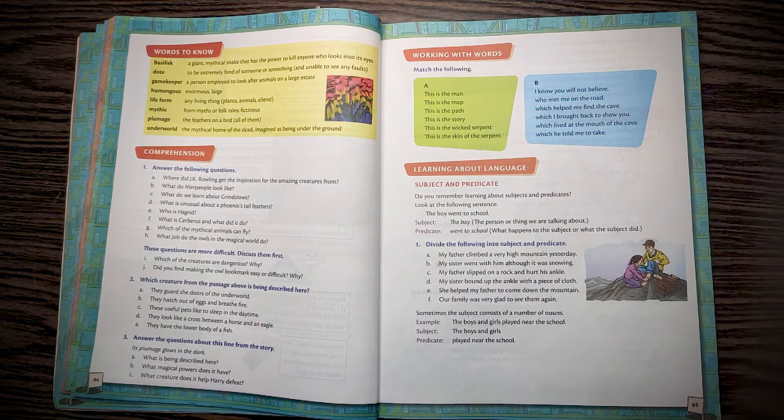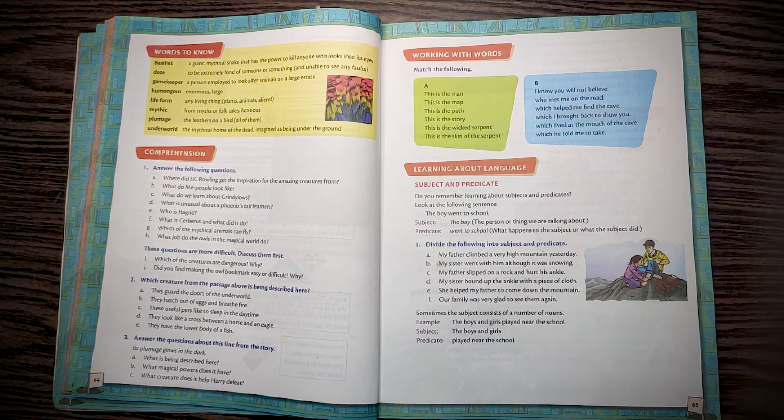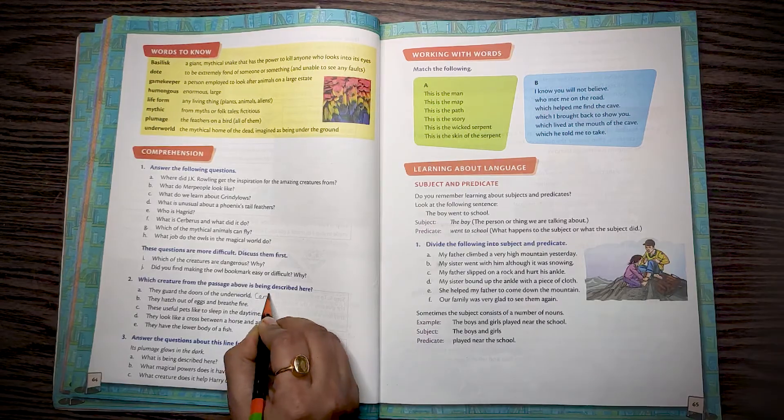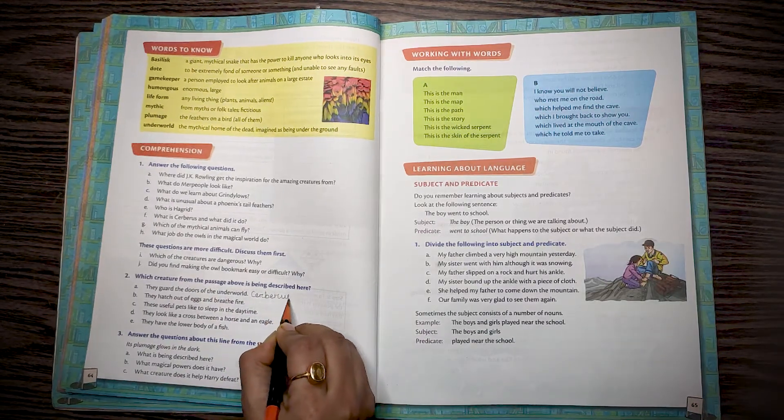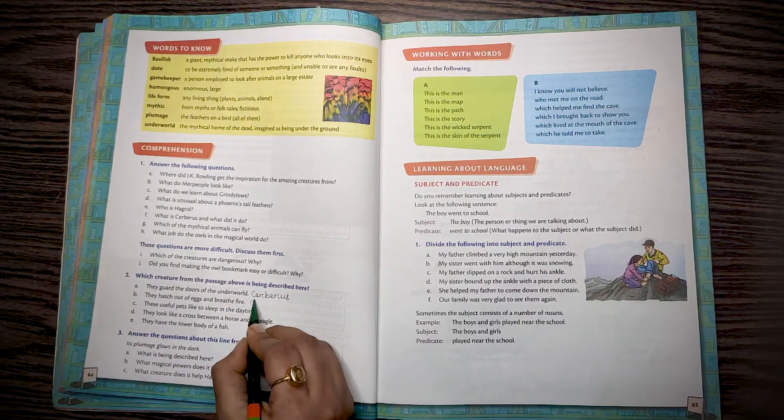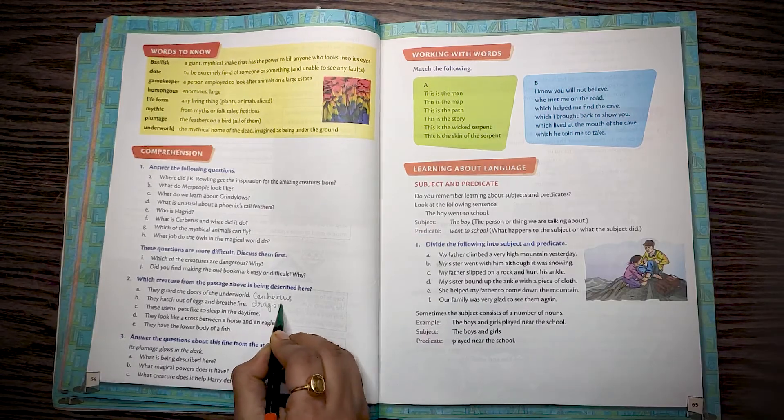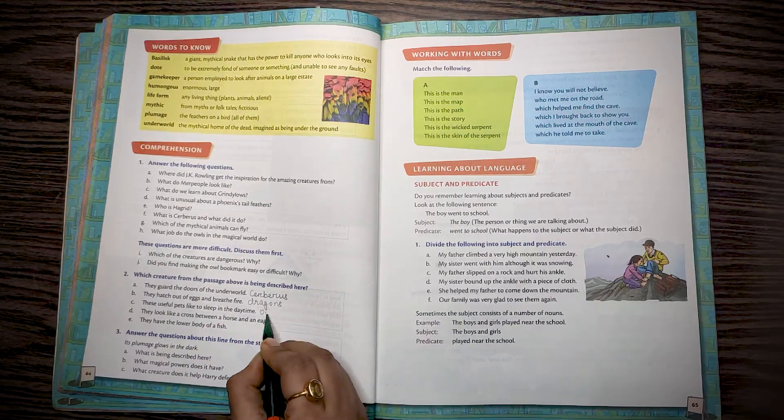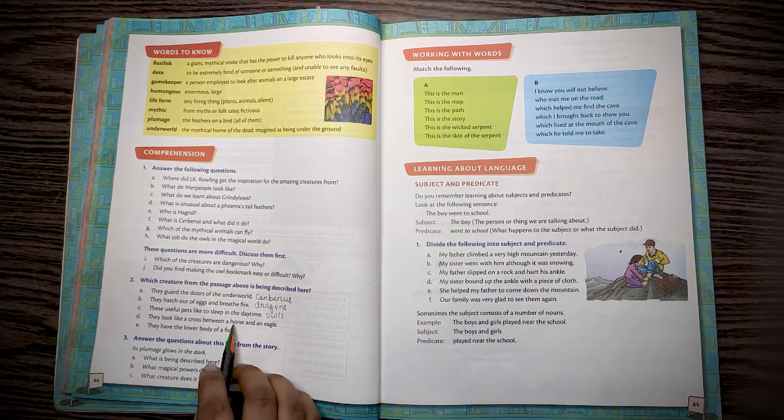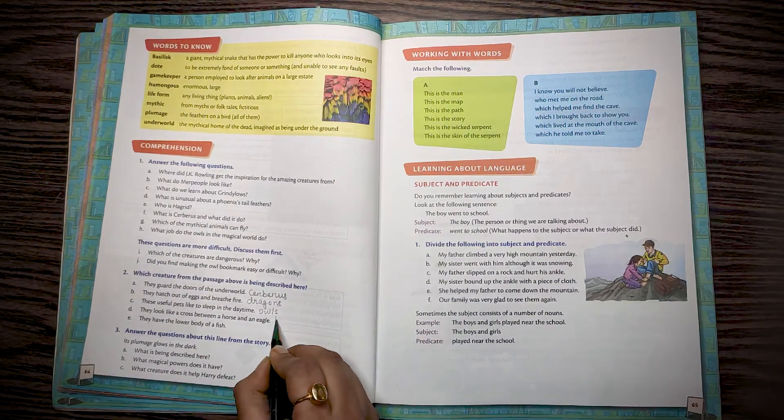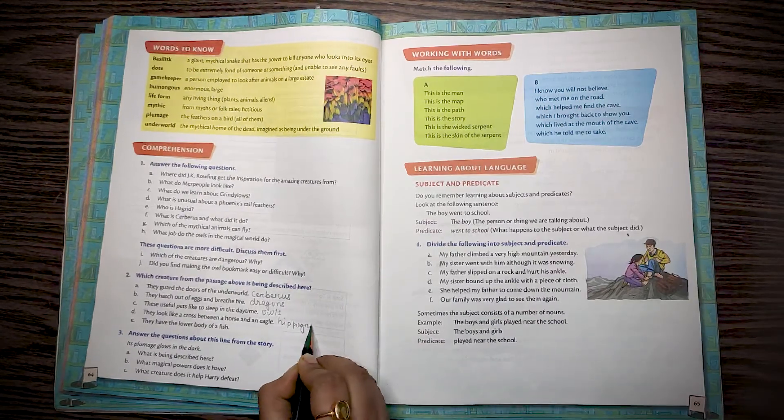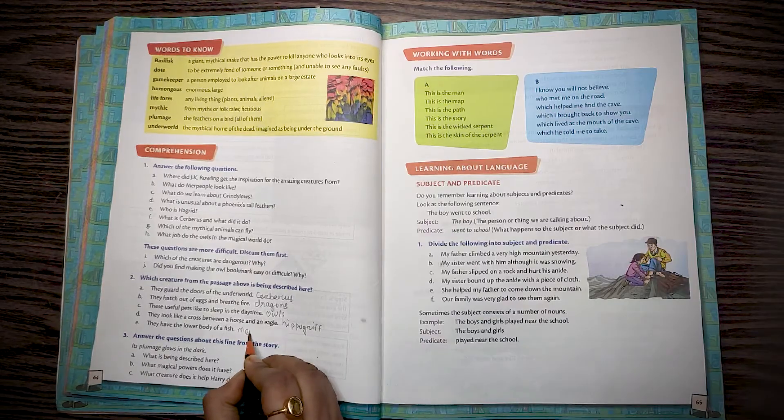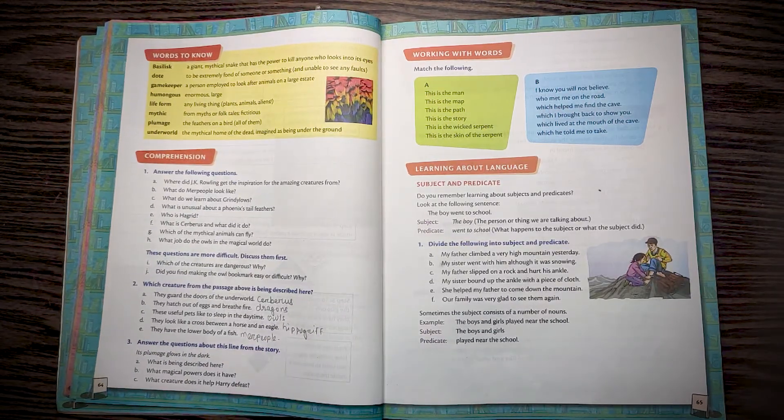Question A: They guard the doors of the underworld. Who are they? Cerebus. Question B: They hatch out of eggs and breathe fire. Dragons. Question C: These useful pets like to sleep in the daytime. Owls. Question D: They look like a cross between a horse and an eagle. Hippograff. Question E: They have the lower body of a fish. Merpeople.